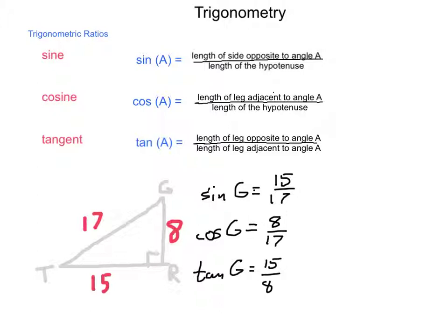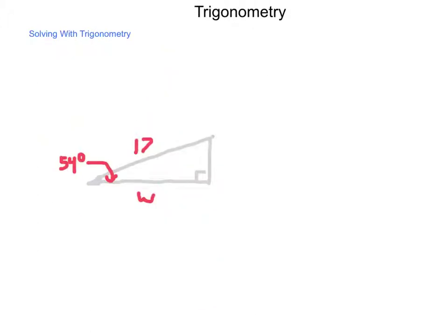We can also use these relationships to find missing values. The trig ratios do show up as values or operations on a calculator, just like addition, subtraction, multiplication, and division. We can use those, along with these known ratios, to find what we're looking for. Here we have a triangle where we know it's a right angle, we know that one of the other angles is 54 degrees, the hypotenuse is 17, and we're looking for one of the legs.